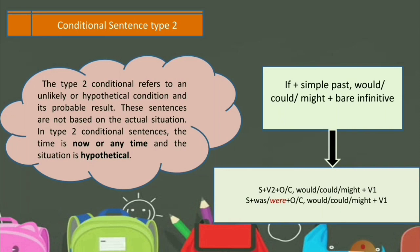Kita lihat rumusnya: Subject + Verb 2 + Object, koma, would/could/might + Verb 1. Rumus dari Simple Past itu ada dua: yang pertama verbal, yang kedua nominal. Untuk nominal: Subject + was/were + Object, koma, would/could/might + Verb 1. Nanti yang kita pakai adalah 'were' saja, karena kita berandai-andai tentang sesuatu yang nggak bakalan bisa kita capai. Jadi jangan lupa: IF + Simple Past + would/could/might + verb infinitive + object or complement.